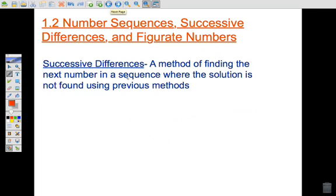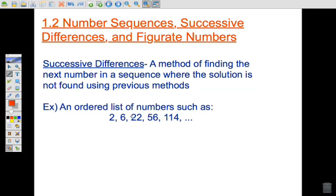and then we have successive differences. This is going to be the most complicated one, but if you go through the process and do the math, it's not so difficult. This is a method of finding the next number in the sequence where the solution is not found using previous methods. So if we're given a list of numbers, let's work through our other types. Arithmetic.